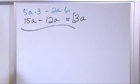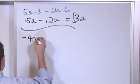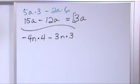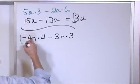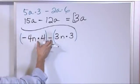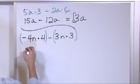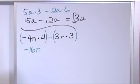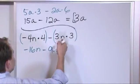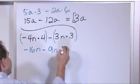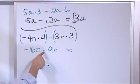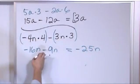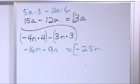Now let's say we have some negative signs: negative 4n times 4 minus 3n times 3. Do the multiplication first. Four times four is sixteen, but we have a negative, so we get negative 16n. Then three times three is 9n. Now we have like terms, so we collect them: negative sixteen minus nine is negative twenty-five. The answer is negative 25n.